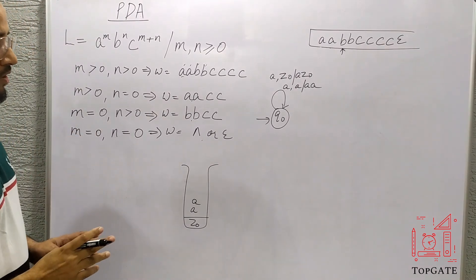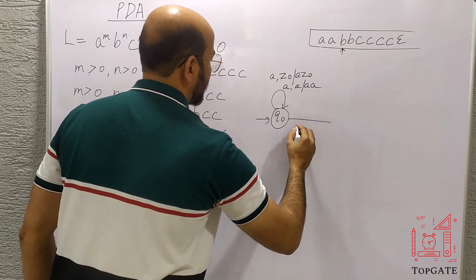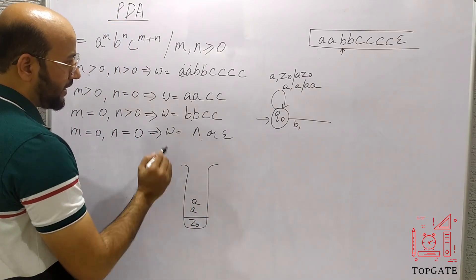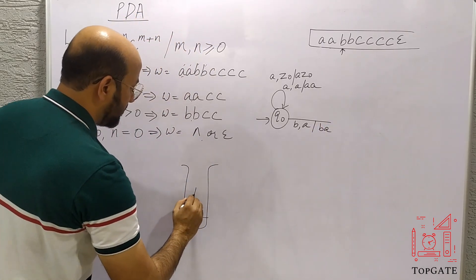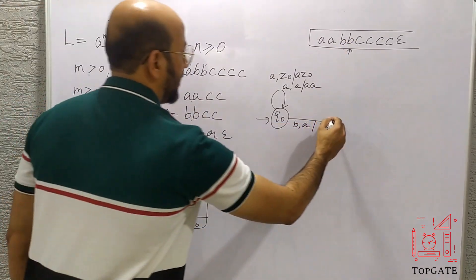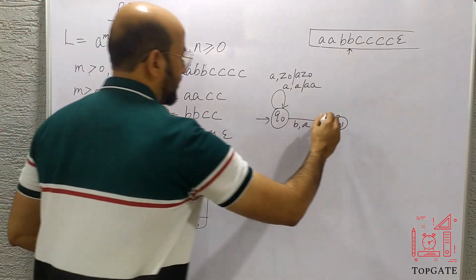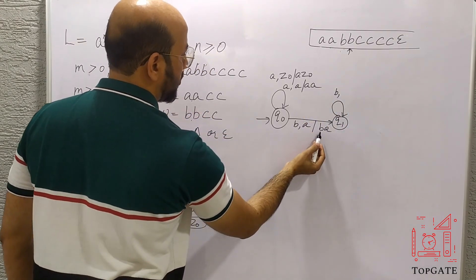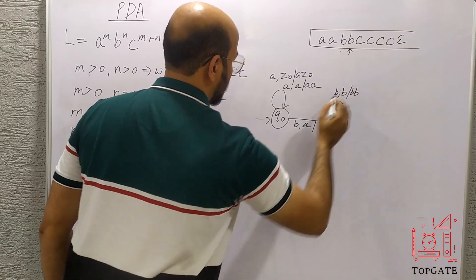For the first b, the element to process is b and the topmost stack element is a. We push b onto the stack, giving b, a, a, z0. We move to state q1. For the next b, the topmost element is now b, so we take a self-loop at q1: element to process is b, topmost is b, and we push it. The next b is also pushed and the pointer moves to the first c.